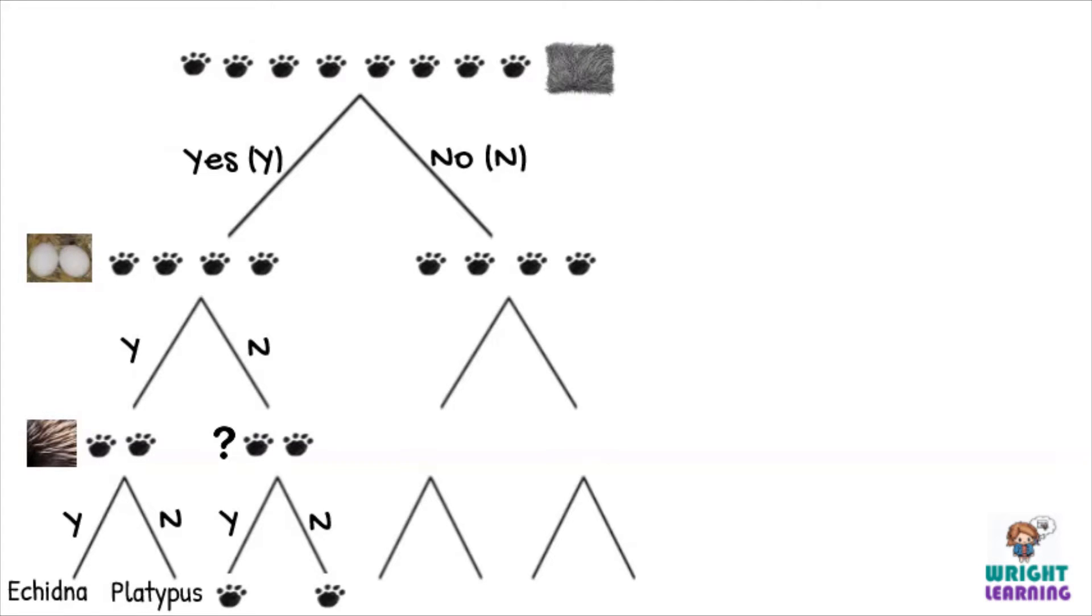Now you just need to focus on the other side of the tree diagram. Remember those starting animals that didn't have fur? You'd need to look at them and figure out how to split them into two groups. For example, some, but not all of them, might have feathers.